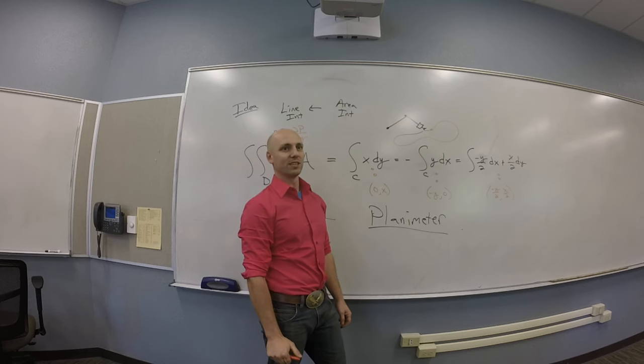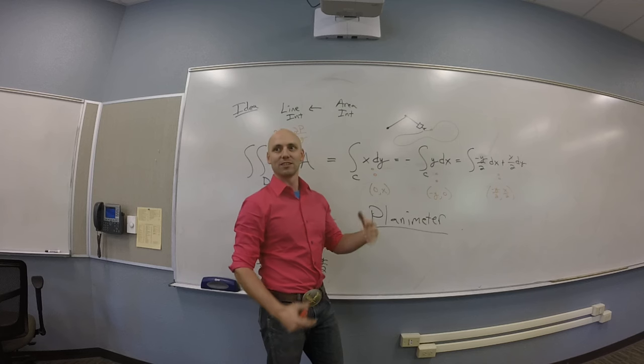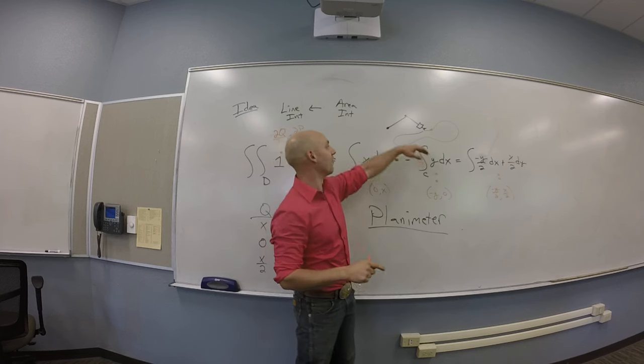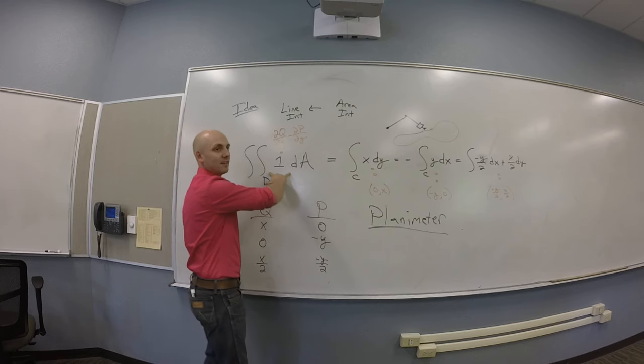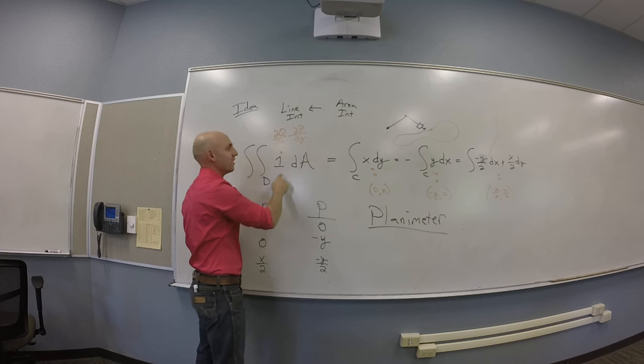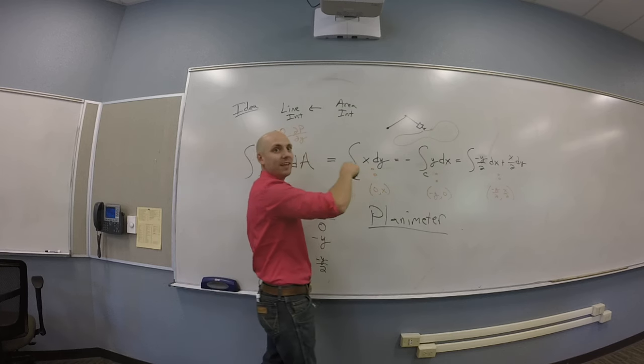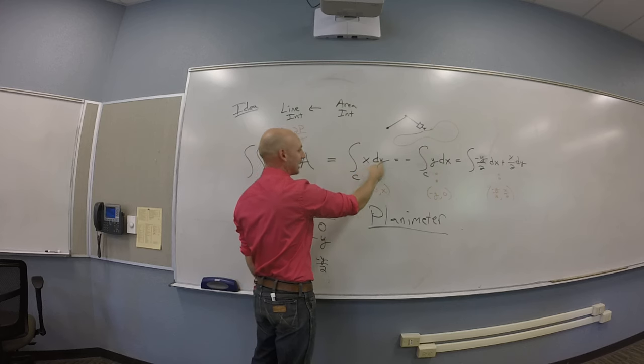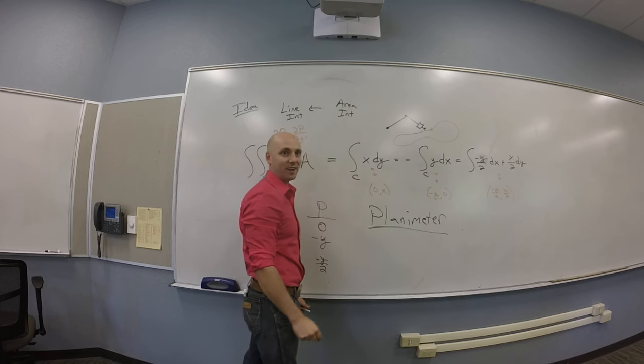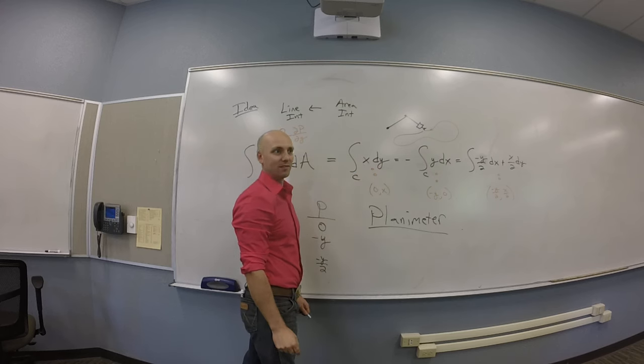So the idea is that you take that area integral that you're trying to calculate. You're trying to calculate what the area of their land is, and you turn it into this funny thing that adds up the x as you change dy.